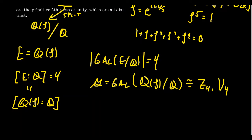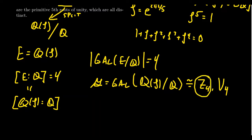We actually saw in a previous video a Galois group of order 4 that turned out to be the Klein 4-group. That's not going to be the case this time. The Galois group is going to be cyclic of order 4. If the Galois group is cyclic of order 4, there has to be an automorphism of order 4—it takes four iterations of the automorphism to produce the identity map. What map possibly could do that?